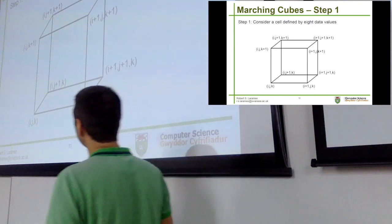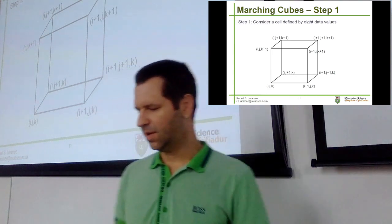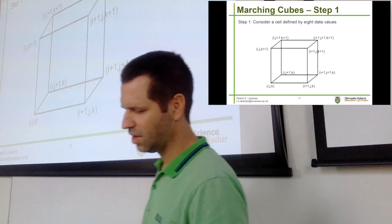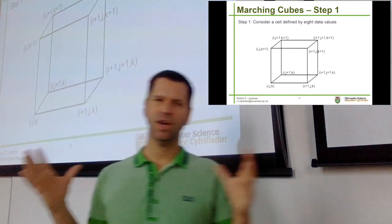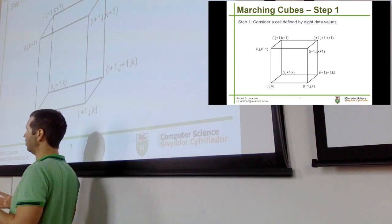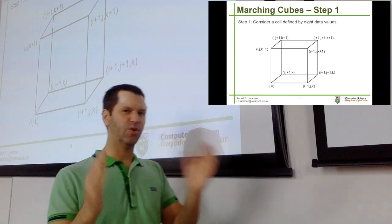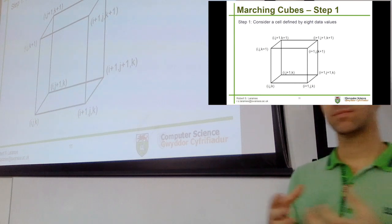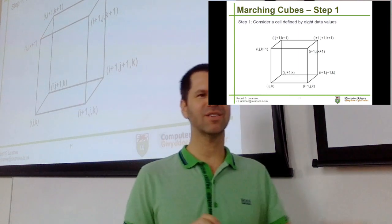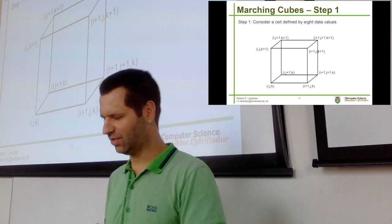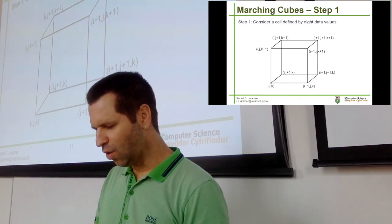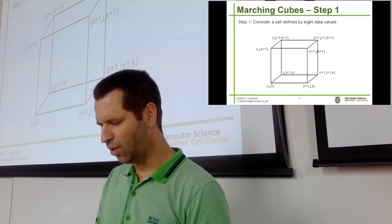Step one is not very difficult to understand. It's looking at constructing a cell of eight vertices. The input to marching cubes is a volume dataset, and the output is a set of triangles that represent a surface — in this case, an isosurface. That volume dataset is subdivided into cubes, for example 256 cubed: 256 along X, along Y, and along Z. That's a standard kind of subdivision of some volume data.